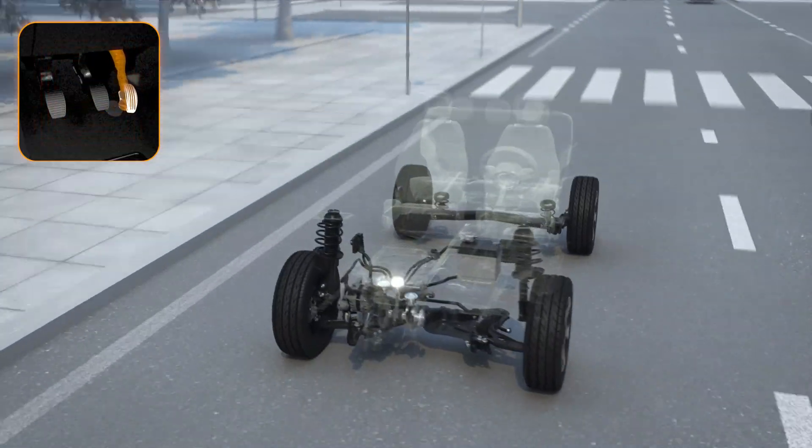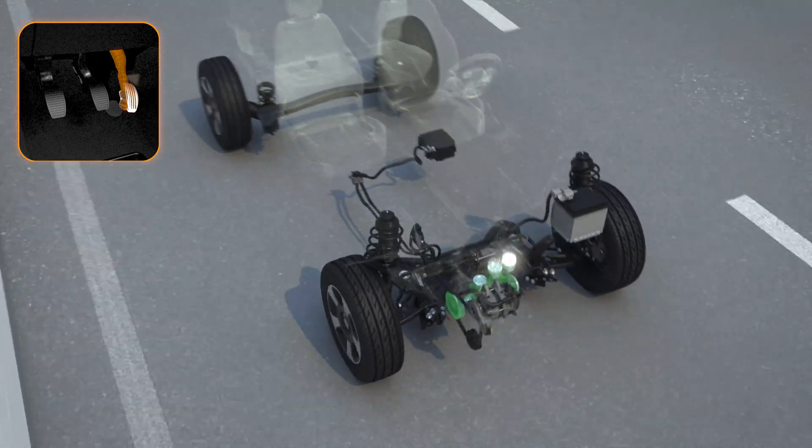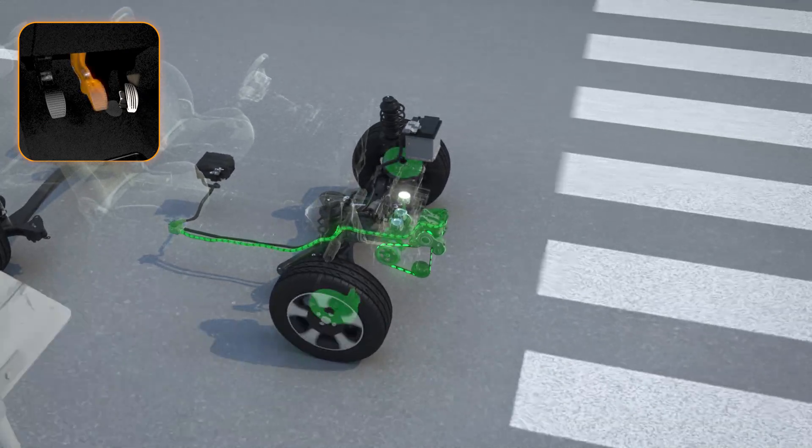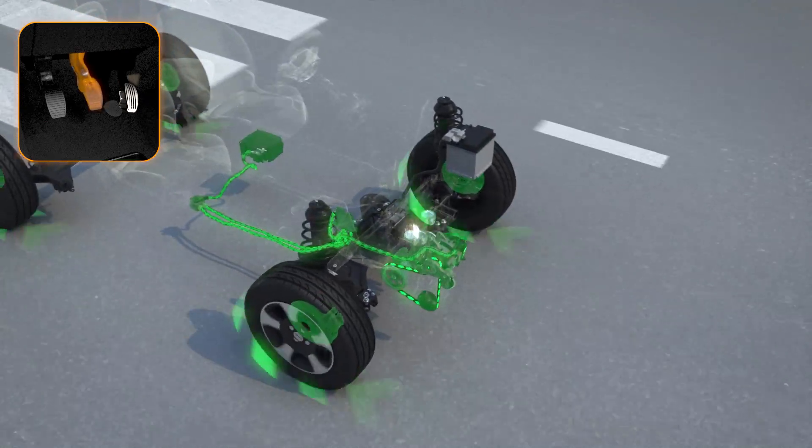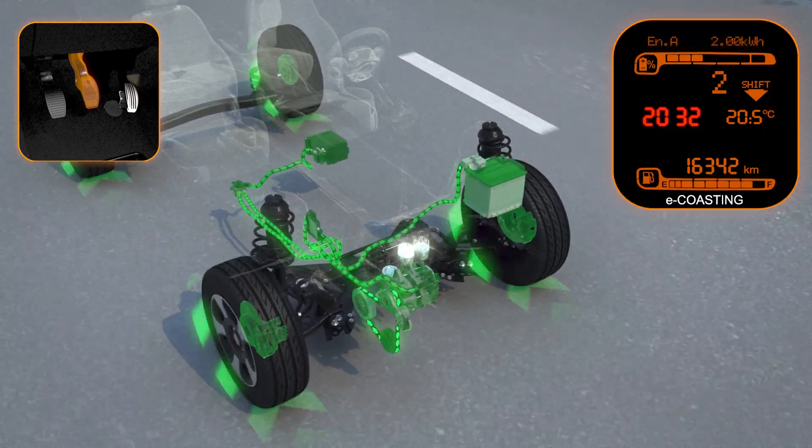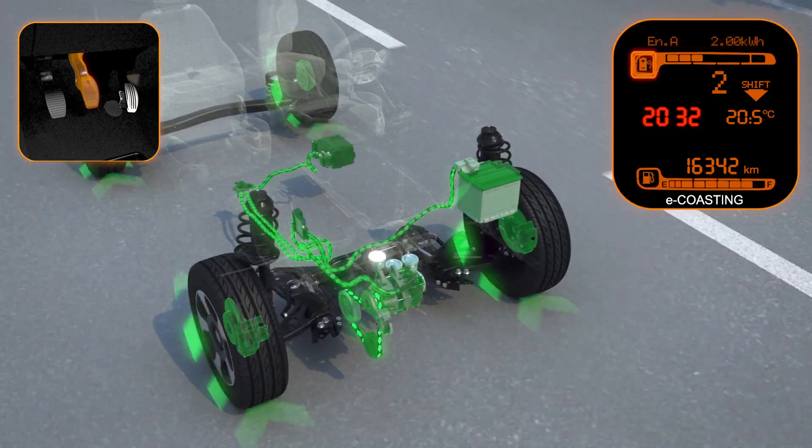The e-coasting function is activated automatically when the driver takes their foot off the accelerator while staying in the selected gear. The hybrid technology automatically recharges the lithium battery in this phase, meaning it doesn't need to be recharged by plugging it into the mains.